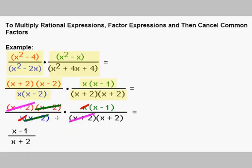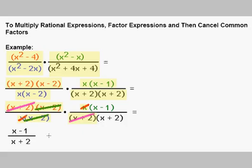Now we cancel out factors common to the numerator and denominator. x plus 2 and x plus 2 cancel out. A factor of x minus 2 cancels with x minus 2 in the denominator. And a factor of x cancels with x. What we're left with is x minus 1 over x plus 2. When you multiply rational expressions, it's almost exactly the same as simplifying one big rational expression — we end up with the same answer, x minus 1 over x plus 2.